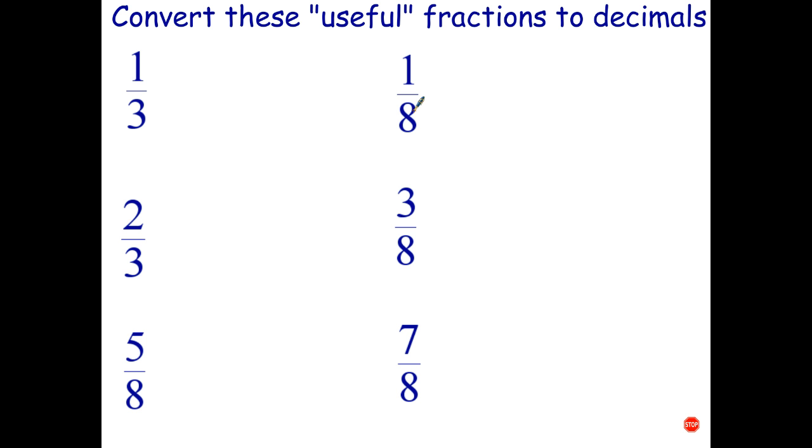So what I'm going to suggest for all of these is you just learn these. So basically, it's good knowledge to just have in your head. So if you need to convert 3/8 to a decimal, you can just say, well, that's 0.375. Let's go ahead and work out what the decimal conversions are for these.